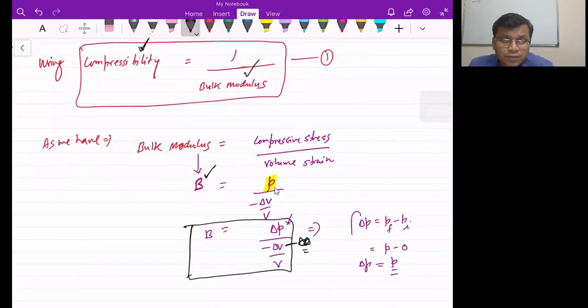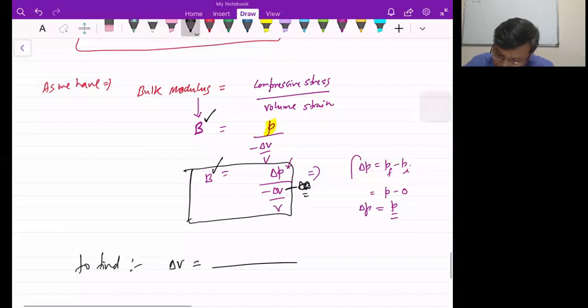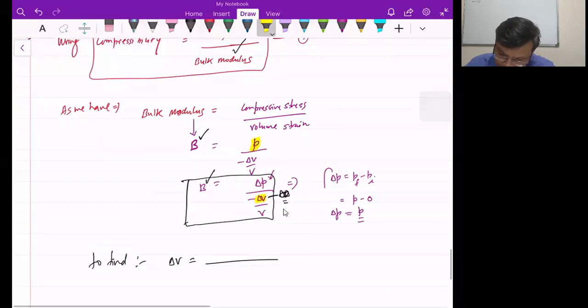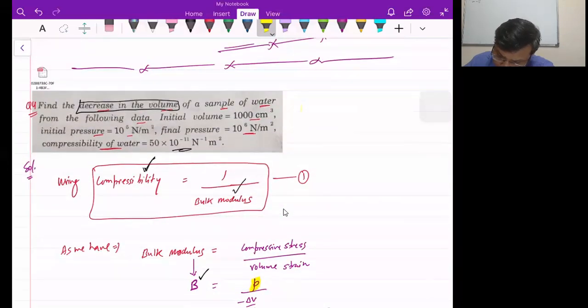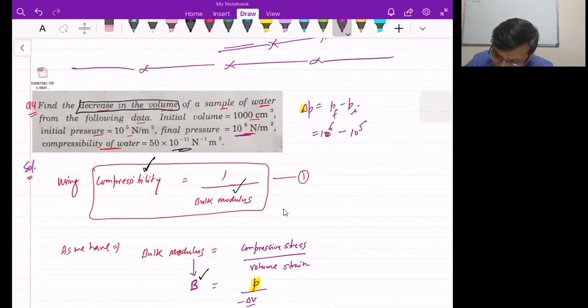We will apply bulk modulus here and you see in the question delta P and V should be given to us. So I'm going to the question, you see if delta P is given to us. See the final pressure is 10 to the power 6 and initial pressure is 10 power 5. Take 10 to the 5 common, we will be left with 10 minus 1. Answer is 9 into 10 power 5 change in pressure.